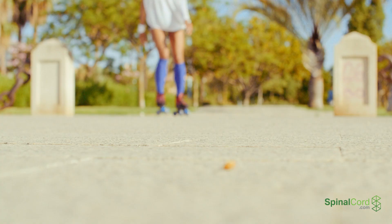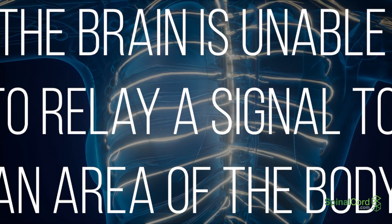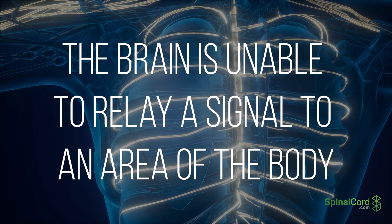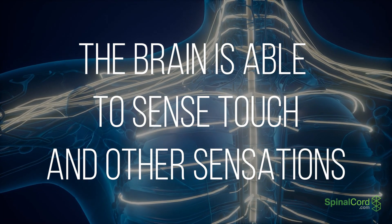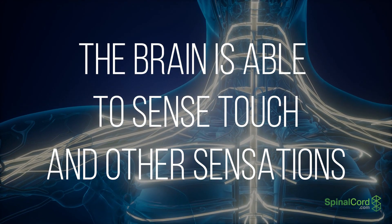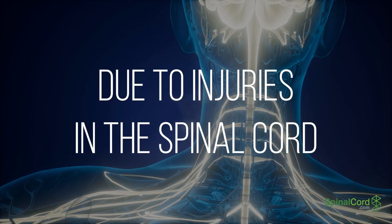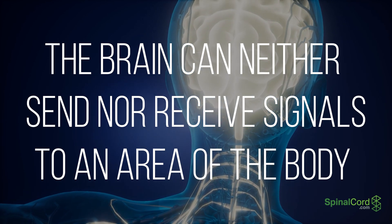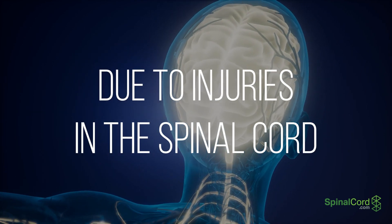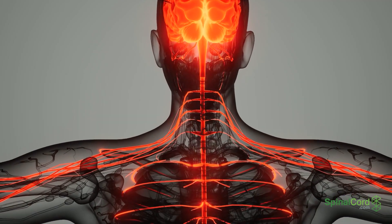So what happens to the body when it is paralyzed? That depends on the cause, but generally at least one of the following factors is in play: the brain is unable to relay a signal to an area of the body due to brain injuries; or the brain can sense touch but is unable to effectively relay a response due to injuries in the spinal cord; or the brain can neither send nor receive signals to an area due to spinal cord injuries. The spinal cord is the brain's relay system, so when it is injured, paralysis is often the result.